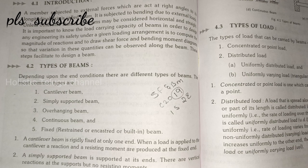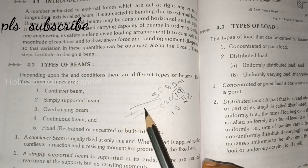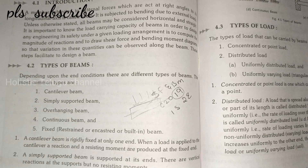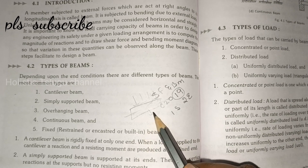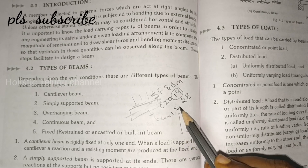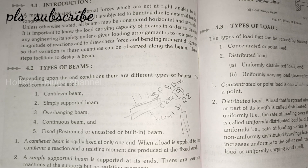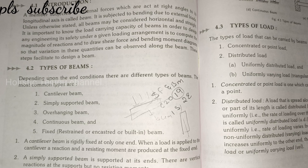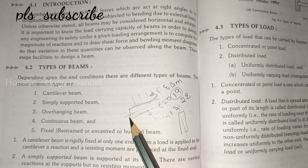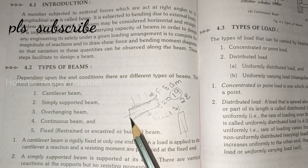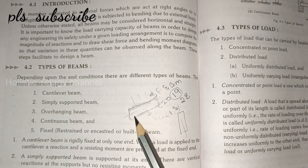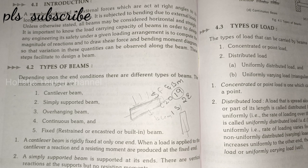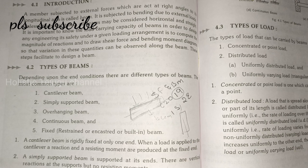Now, longitudinal axis — we will get the longitudinal axis and take it. The name is beam. So the name for a column — there is a difference. Force acts along the member axis. According to member axis, we will look at the first type.